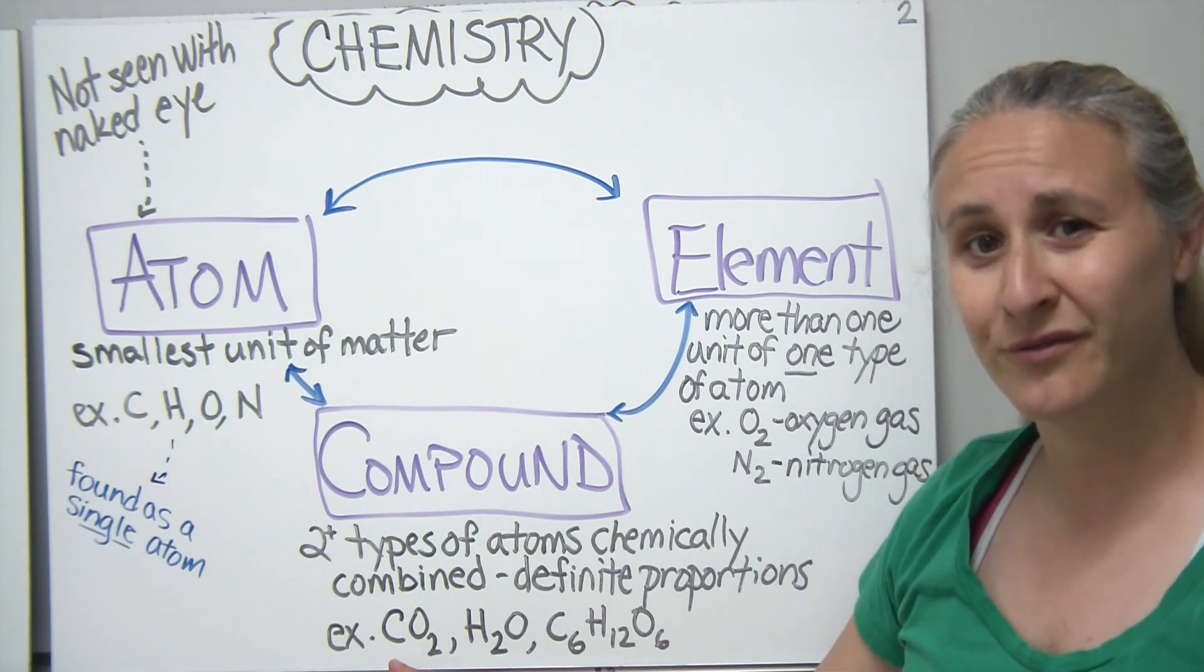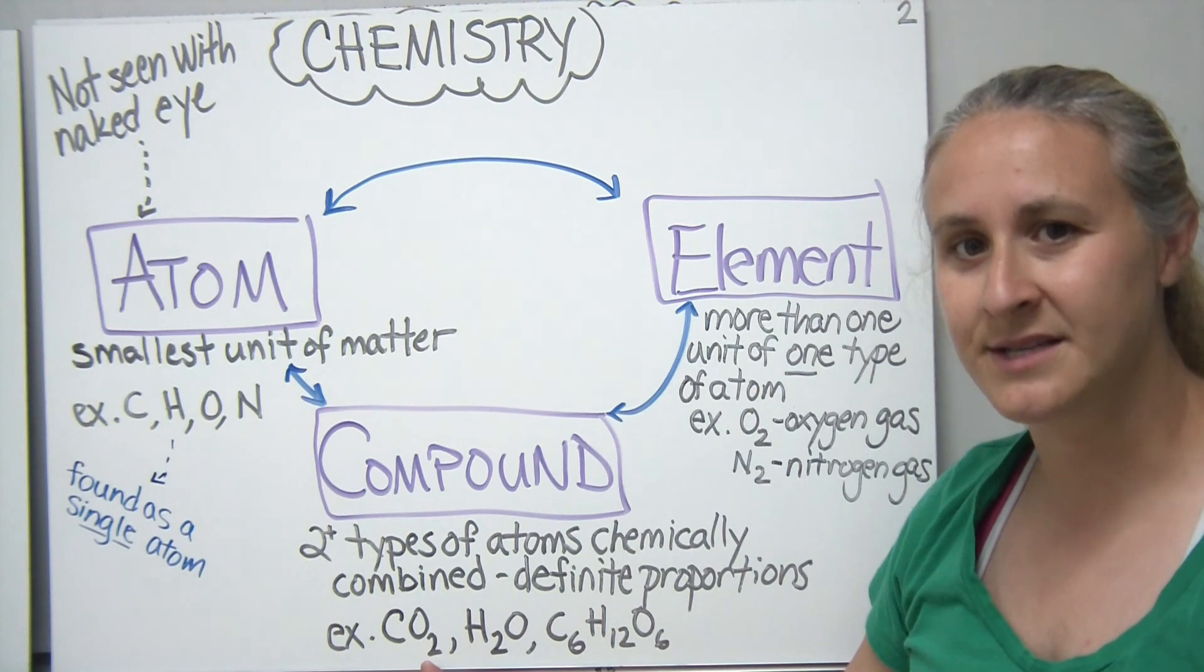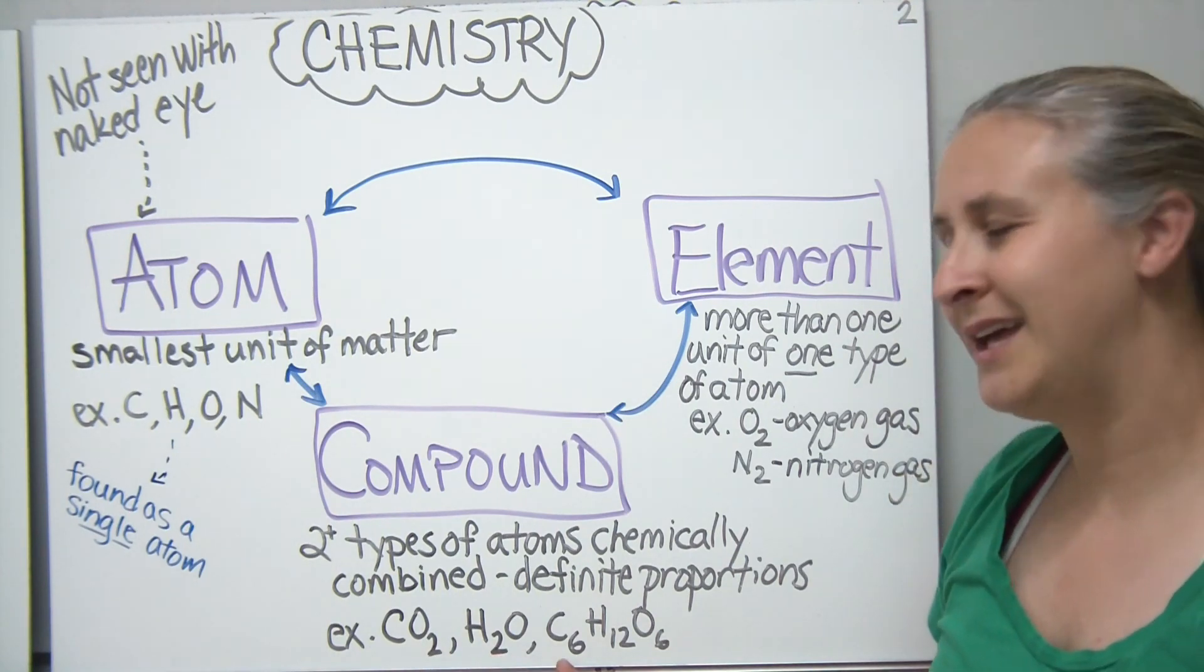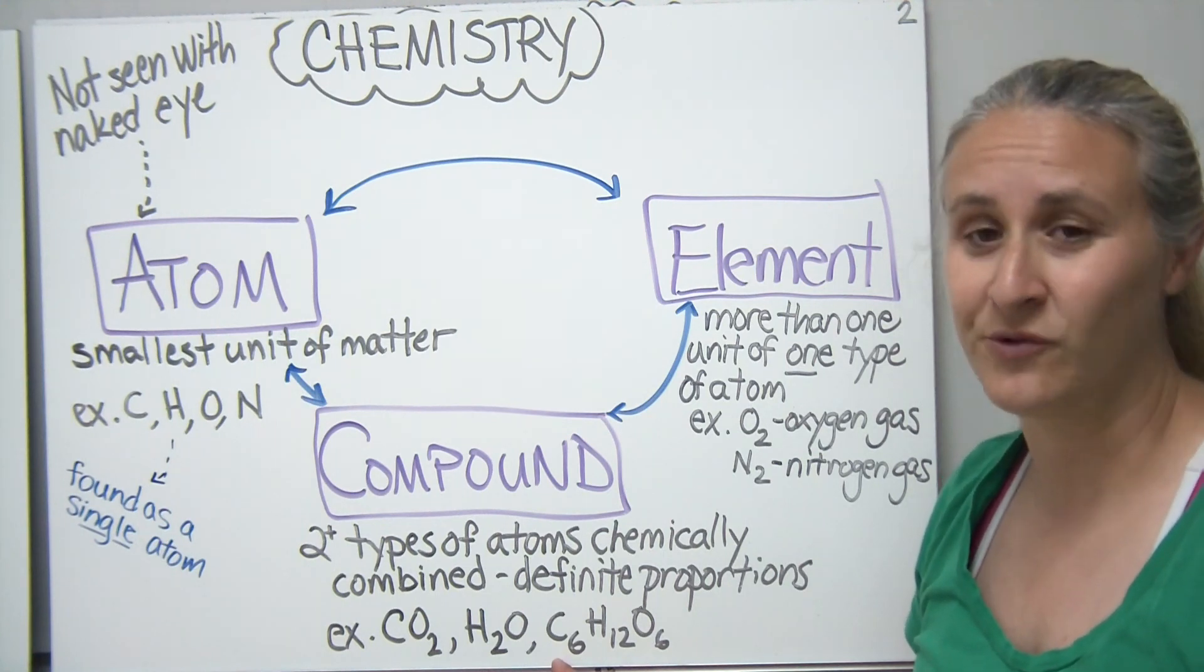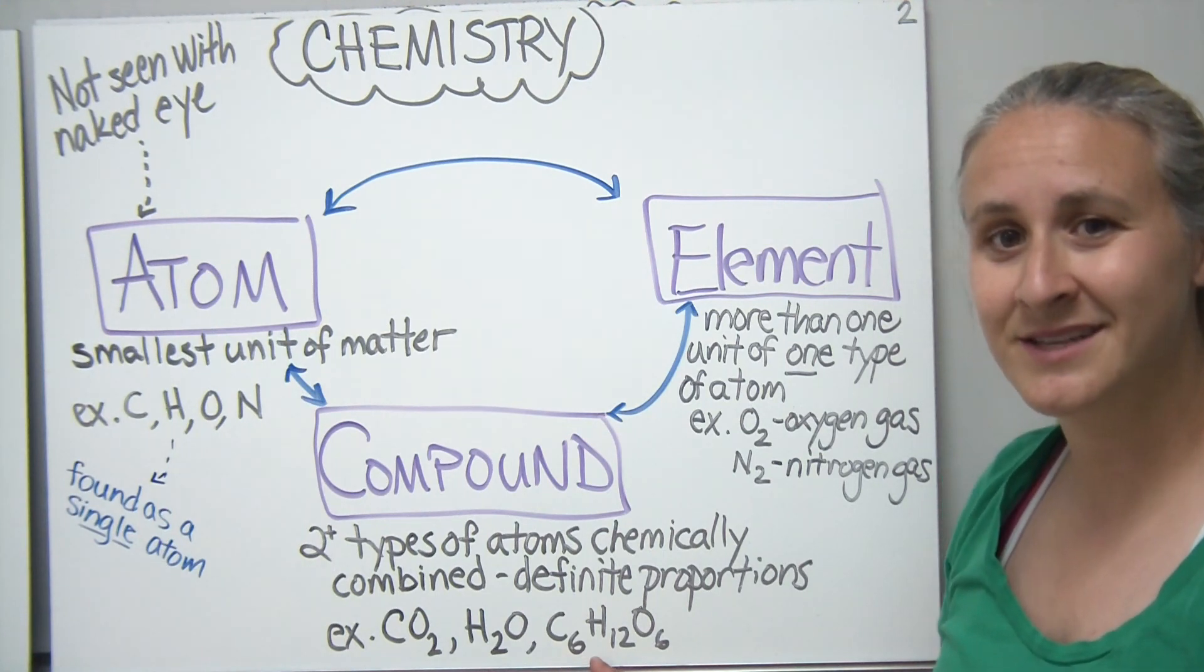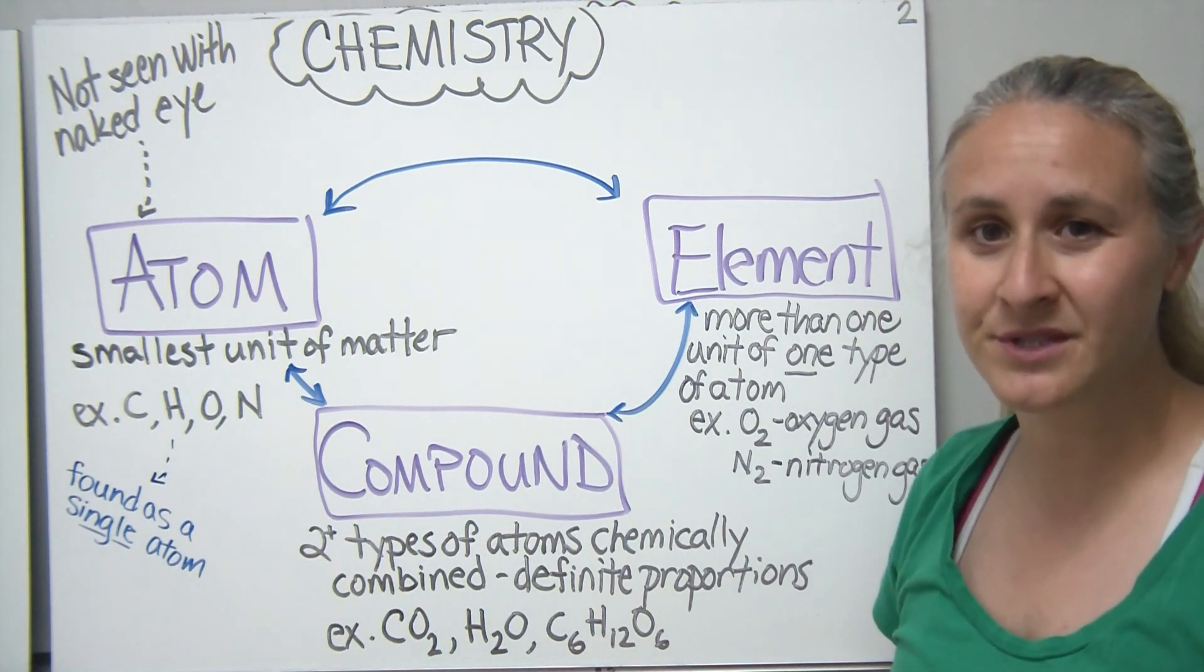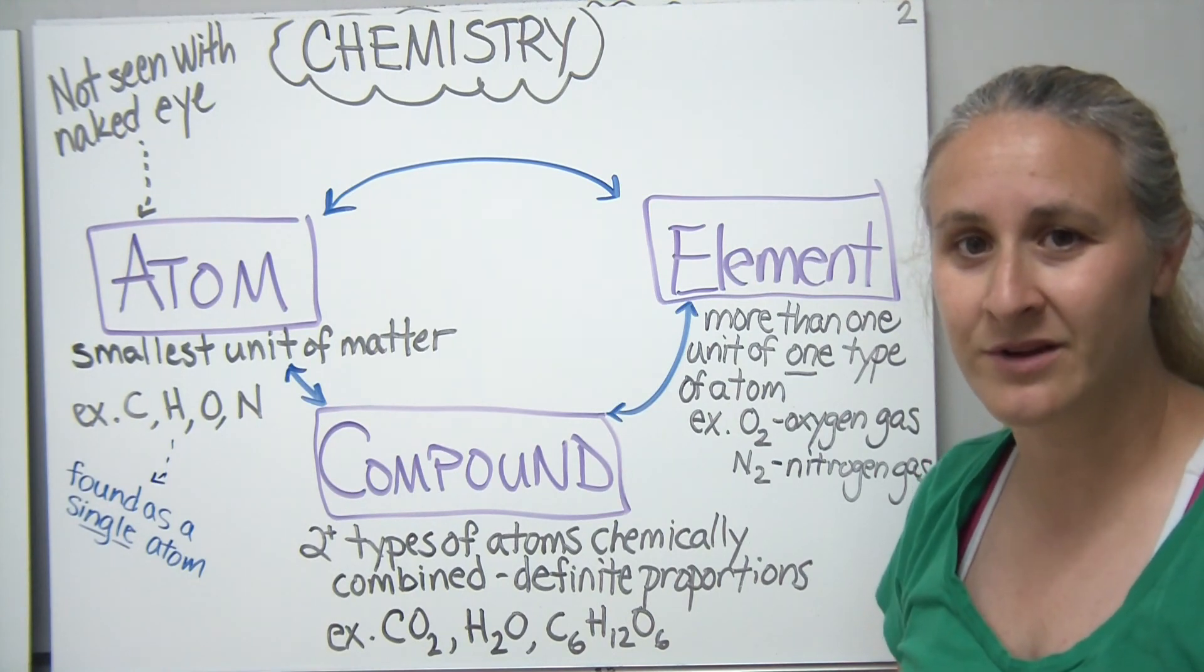So some examples of compounds that you're familiar with would be CO2, which is carbon dioxide, H2O, which is water, and a new one that maybe you don't know the formula for, but you've heard the name before probably, is C6H12O6, which makes up glucose. Glucose is one of our most common simple sugars that we're going to be discussing later on.